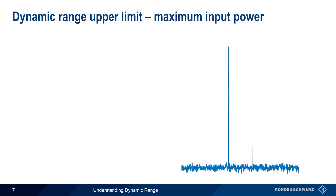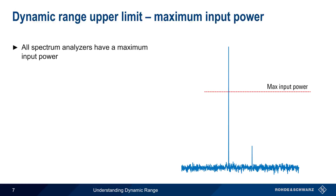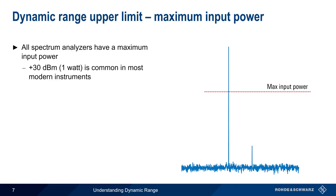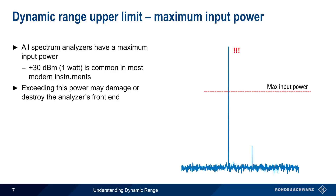Next, let's look at what limits the upper end of dynamic range. All spectrum analyzers have a specified maximum input power. In most modern analyzers, this is +30 dBm, or 1 watt. This maximum safe input power is usually printed directly next to the input connector itself. If maximum input power is exceeded, the analyzer's front end can be permanently damaged or destroyed, so clearly this maximum input power represents the maximum upper limit of dynamic range.